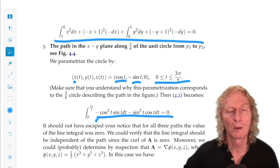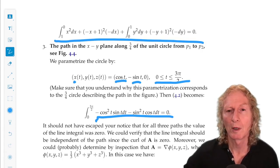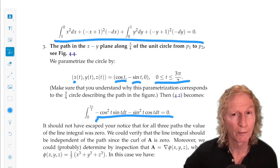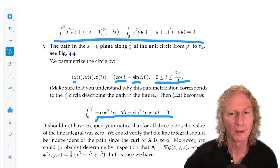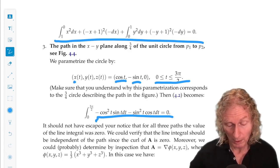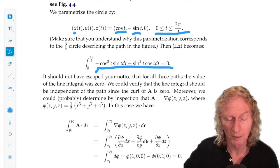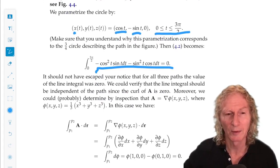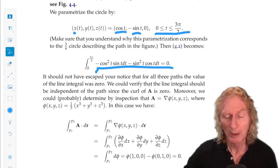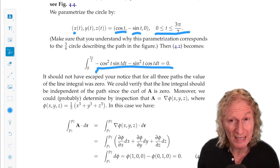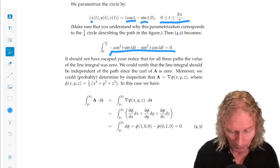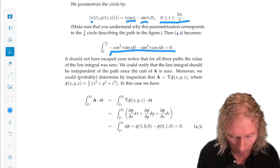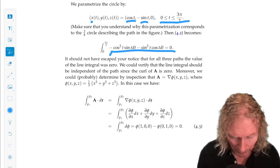So, we've computed the line integral from P1 to P2 along three different paths, and we always got the same answer, 0. Does that mean it's independent of path? Well, the same answer for three paths does not allow us to conclude that it would be the same answer for any path, but it's pretty good evidence.